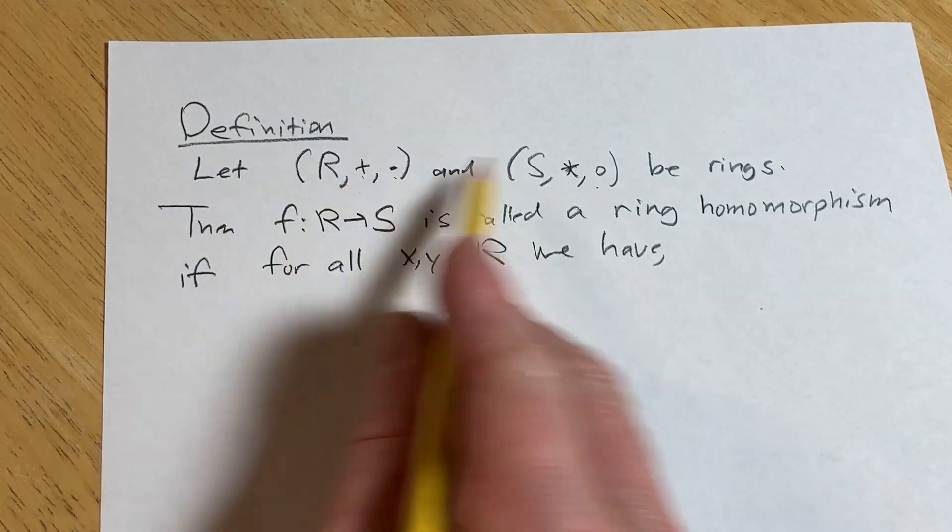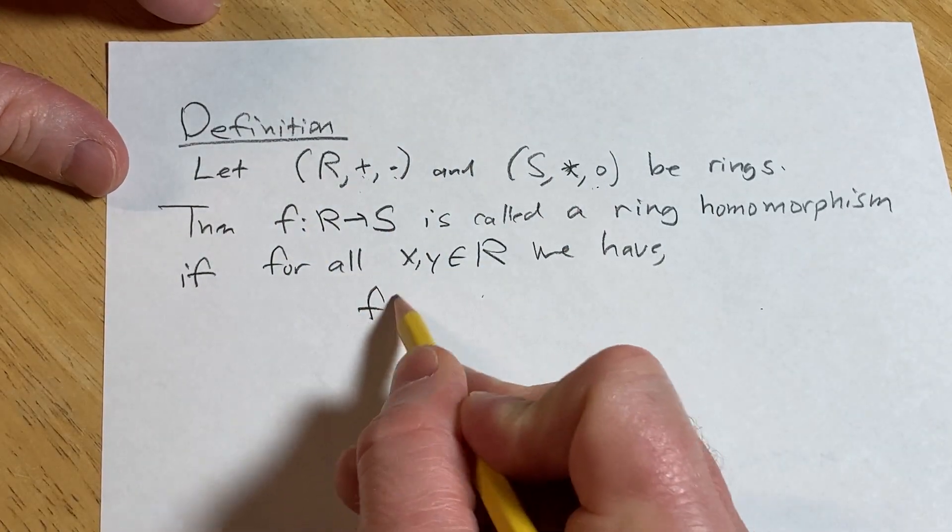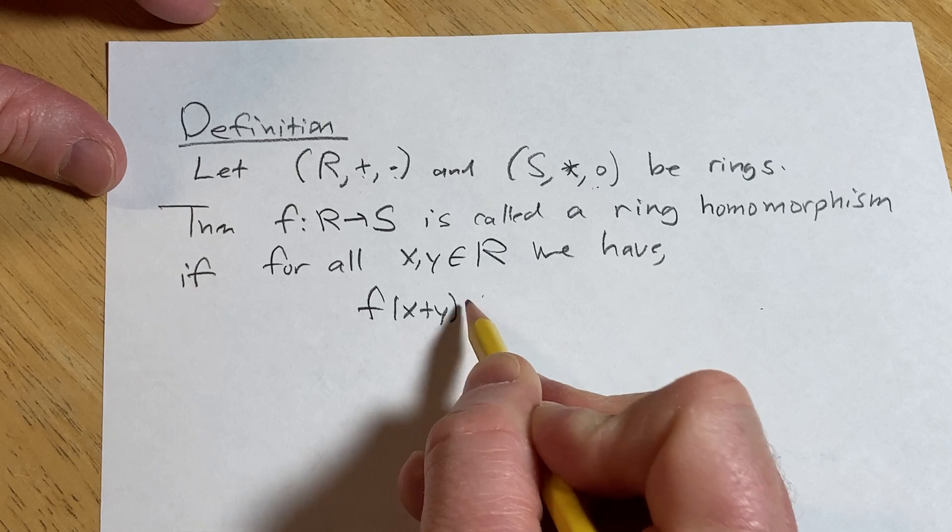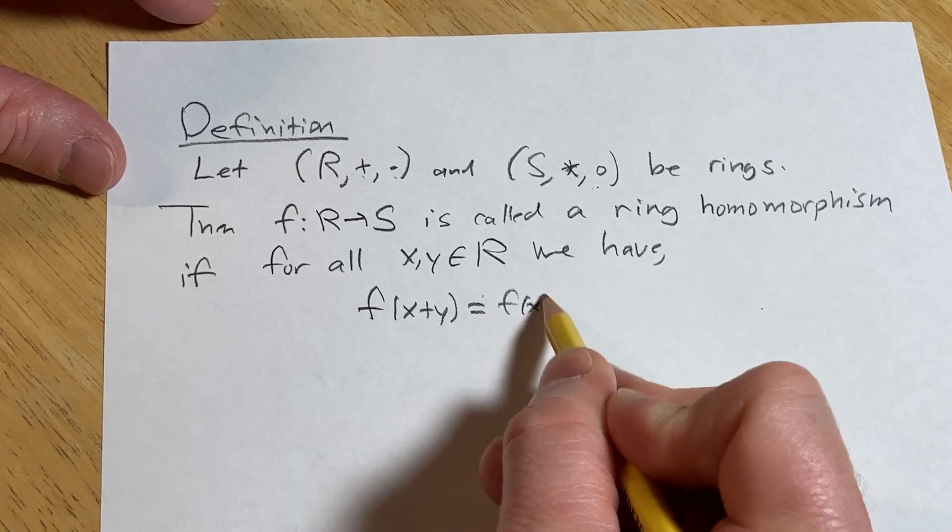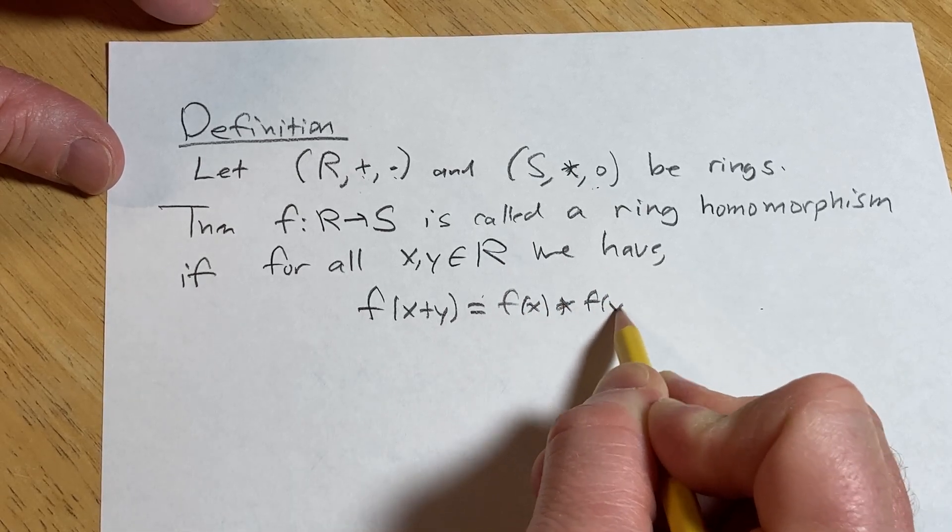First, we're going to deal with the addition. We have f of x plus y is equal to f of x star f of y.